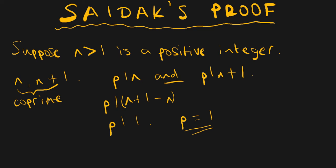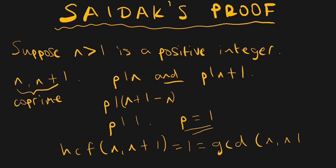The way we write this is that the HCF — the highest common factor — of n and n plus one is equal to one. Sometimes you might also see this written as GCD, which stands for the greatest common divisor. So the greatest common divisor of n and n plus one is one.